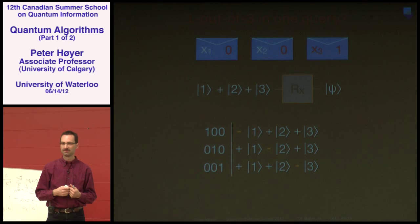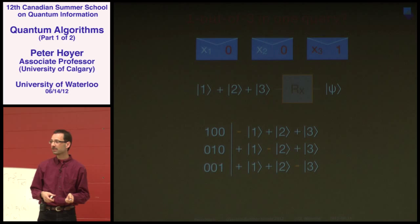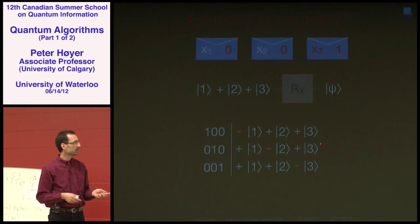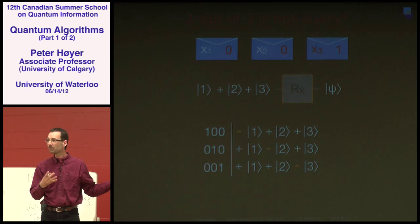Now let's do the same with three envelopes. After one query using the phase oracle, one of three phases is negated depending on which envelope holds the one. Unfortunately, these three resulting states are not orthogonal. Taking the inner product of two of them gives minus one-third, not zero. So they cannot be distinguished perfectly — there is no unitary that maps these three states to computational basis states |1⟩, |2⟩, |3⟩.